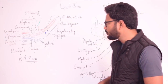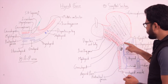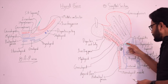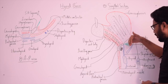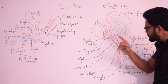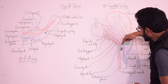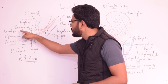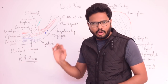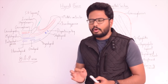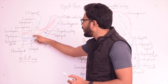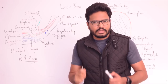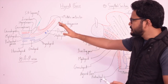Starting with the anterior surface of the body of the hyoid: it is convex and directed upwards and forwards, whereas the posterior surface is concave and directed downwards and backwards. The anterior surface receives attachments of the geniohyoid muscle and the mylohyoid muscle. Additionally, the anterior surface of the body of the hyoid gives origin to part of the hyoglossus muscle, which further extends on to the greater cornua.